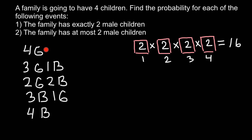These combinations don't happen with the same frequency. For example, the probability of having all four children be girls is only one combination — girl, girl, girl, girl — so that's 1 out of 16. Similarly, the probability of all four boys is also 1 out of 16. The probability of three girls and one boy equals 4 out of 16.